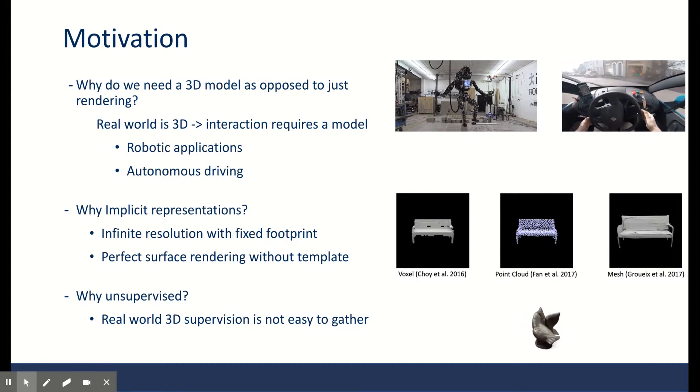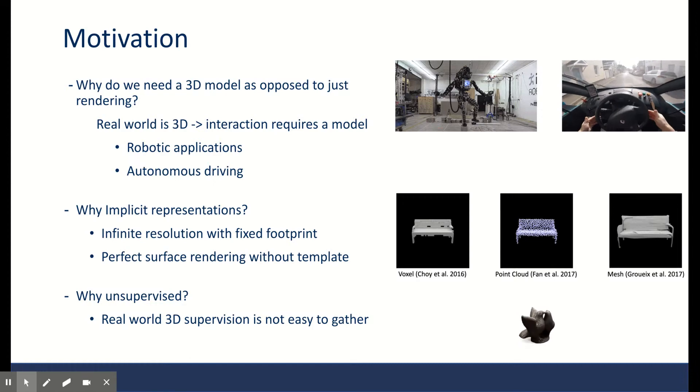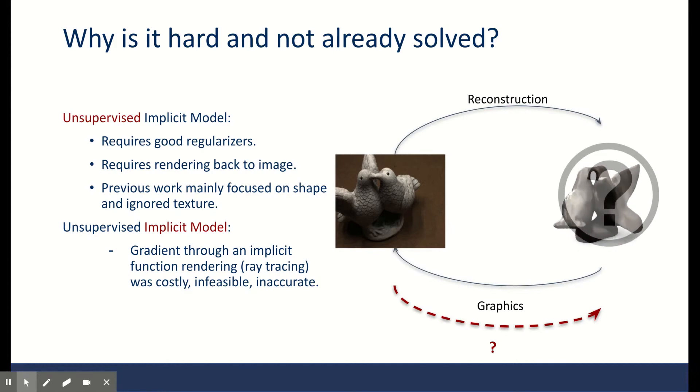So why is this hard and no one has done unsupervised 3D modeling with implicit representations? The answer is that the combination of implicit representations and unsupervised learning is especially challenging. The main reason being unsupervised learning means that you only have 2D RGB images, which means you can only train on the RGB images. You have to render back from your model to the RGB images.